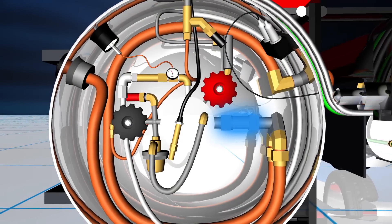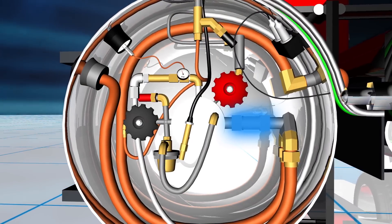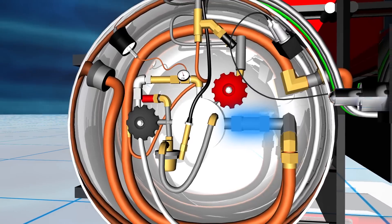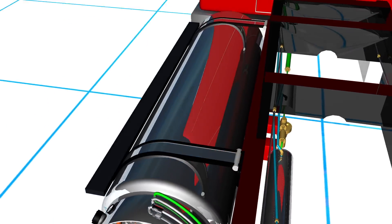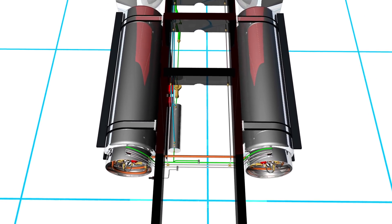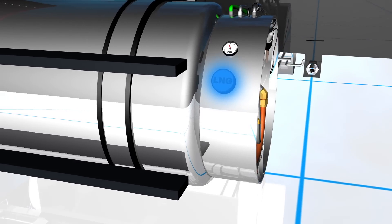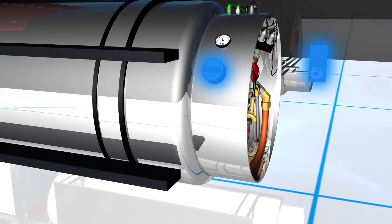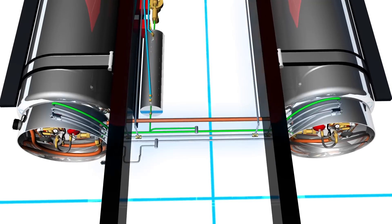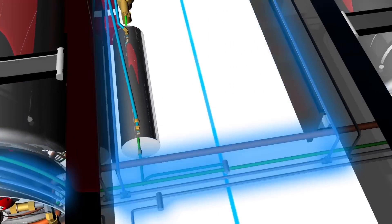The fill check valve prevents the tank contents from escaping in case of an accident or fill coupler failure. Note that if your vehicle has two or more LNG tanks, there will only be one fill receptacle and one vent connection back to the station. The tanks are connected and normally operate in parallel.